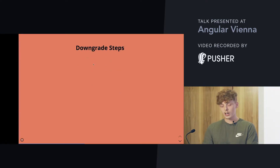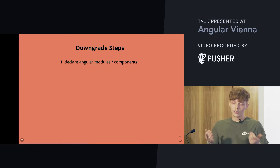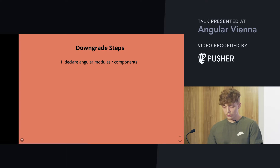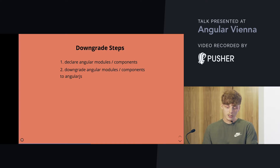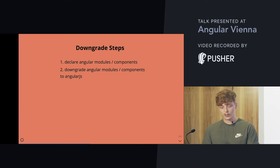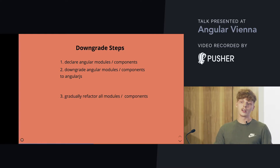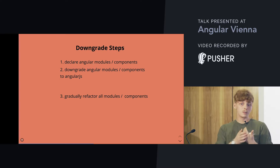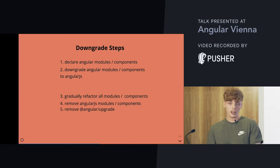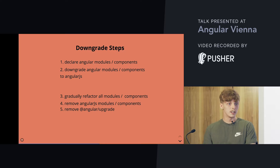The downgrade steps are actually really simple. You need to declare your Angular 2, 4, or 5 module and its components, then downgrade your Angular modules and components to AngularJS after implementing them. After that, refactor the components and directives from your AngularJS application and move them to your new Angular 2 module. In later steps, remove the old AngularJS modules and also the Angular upgrade package, since it won't be needed anymore.